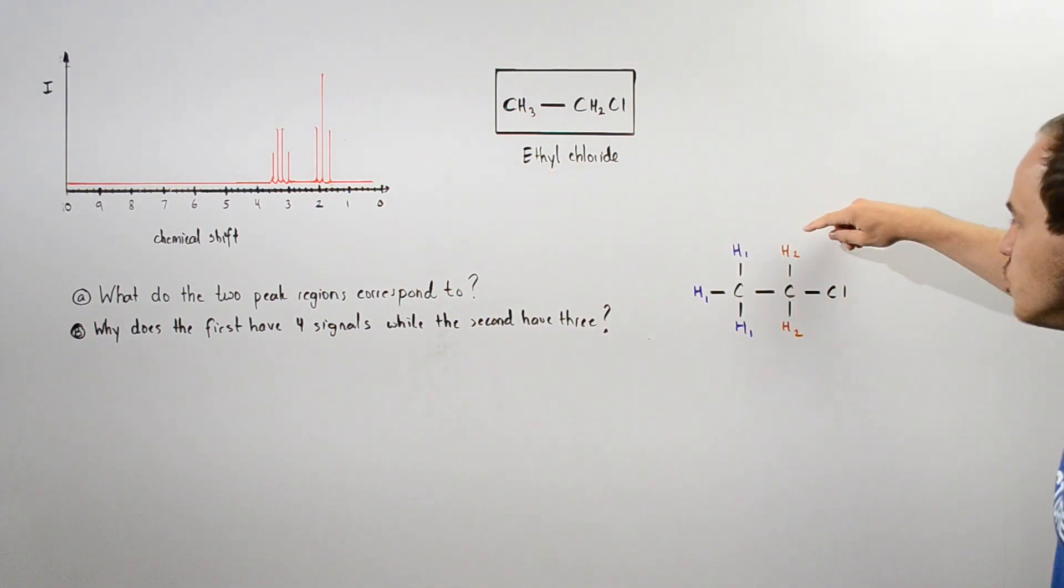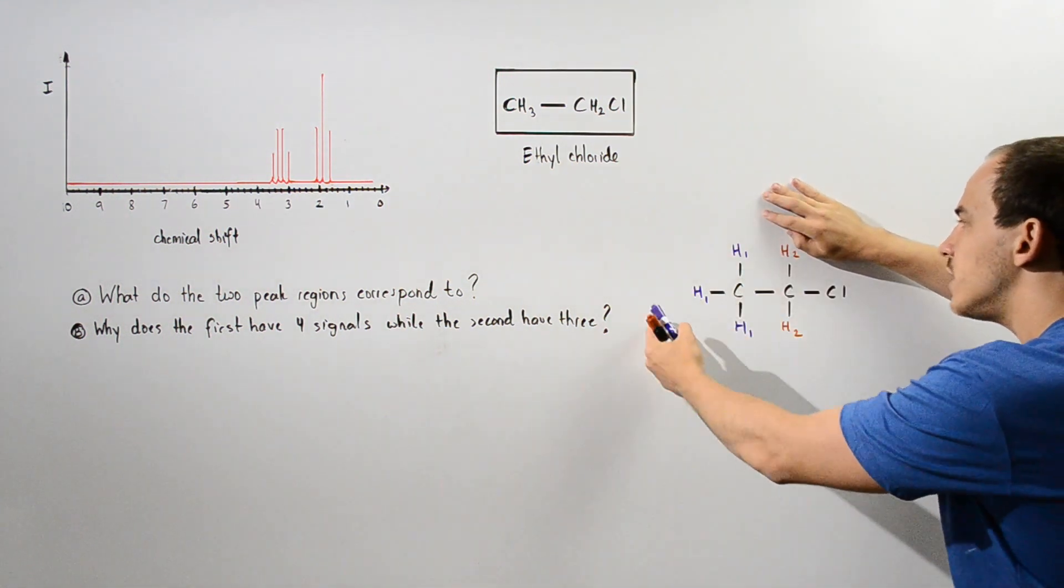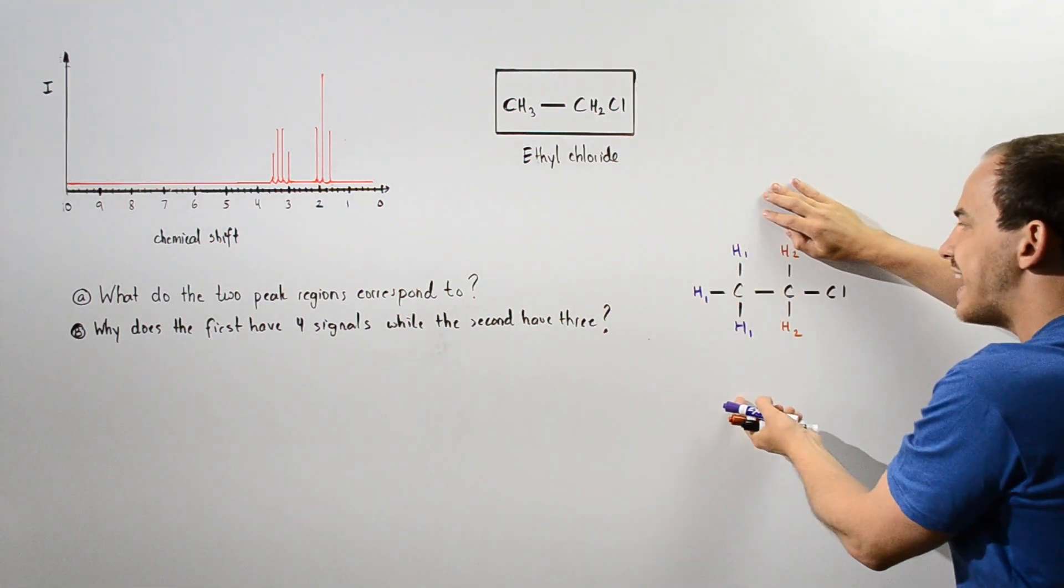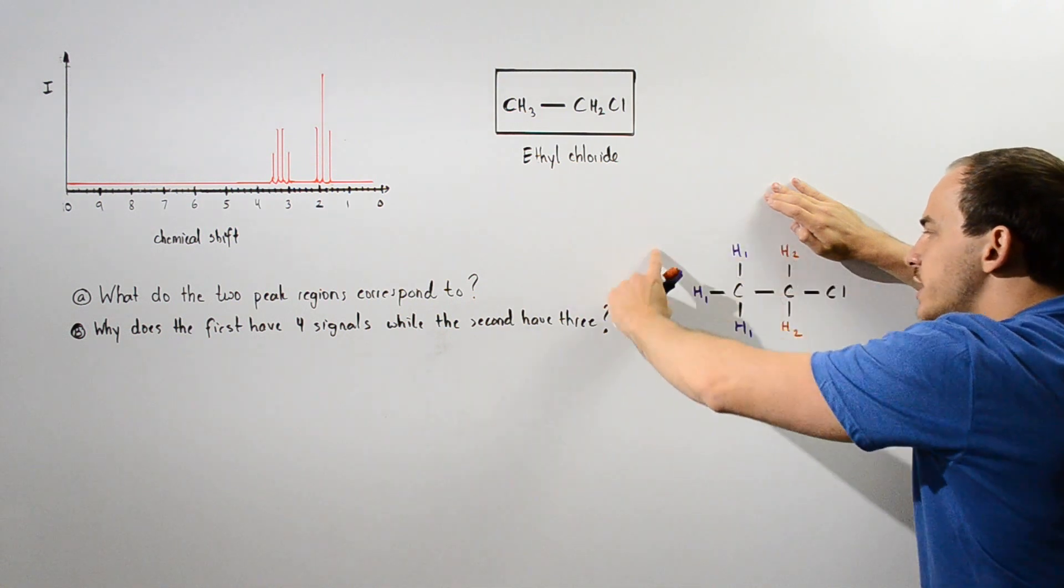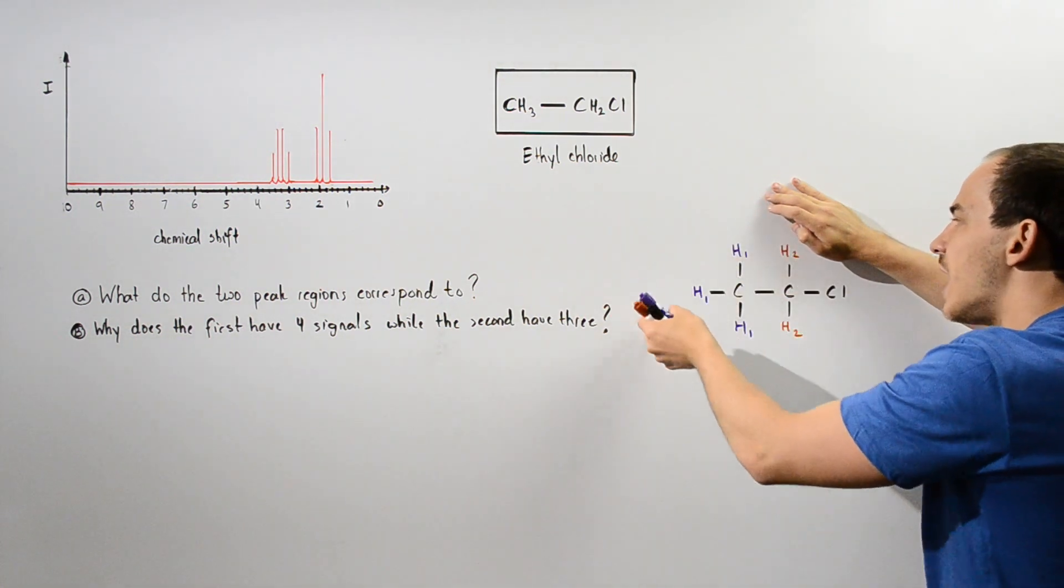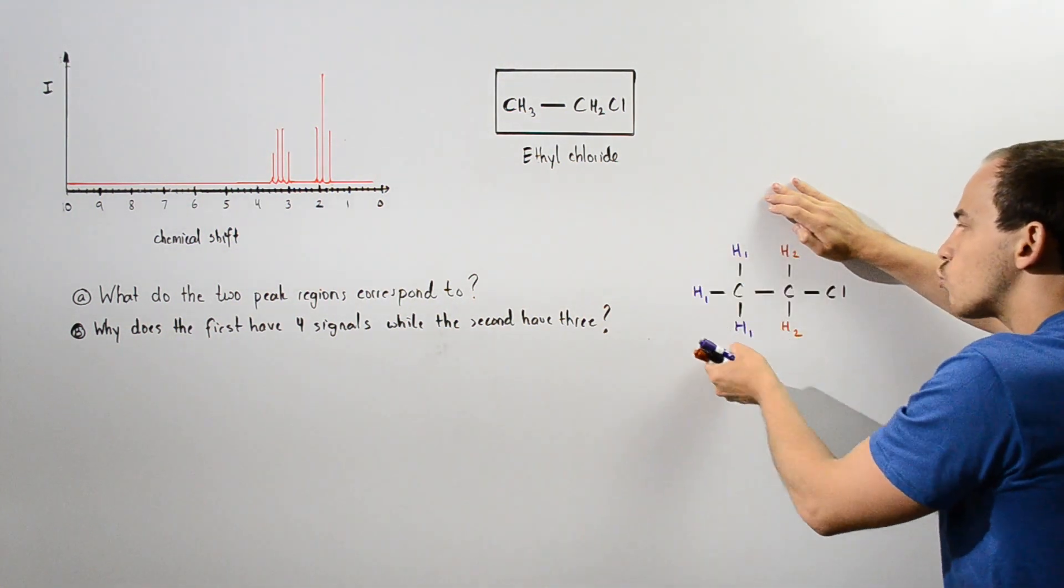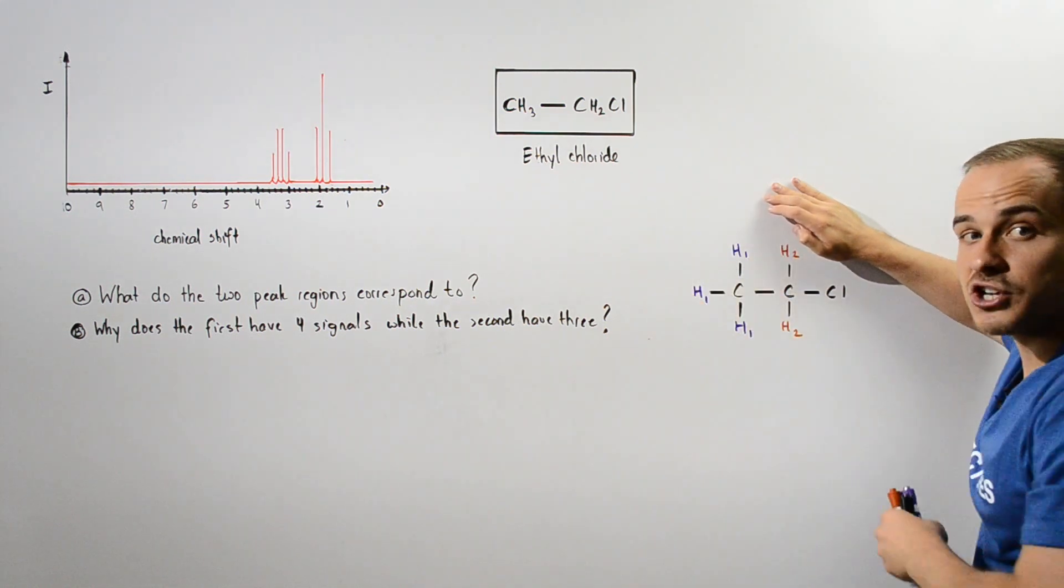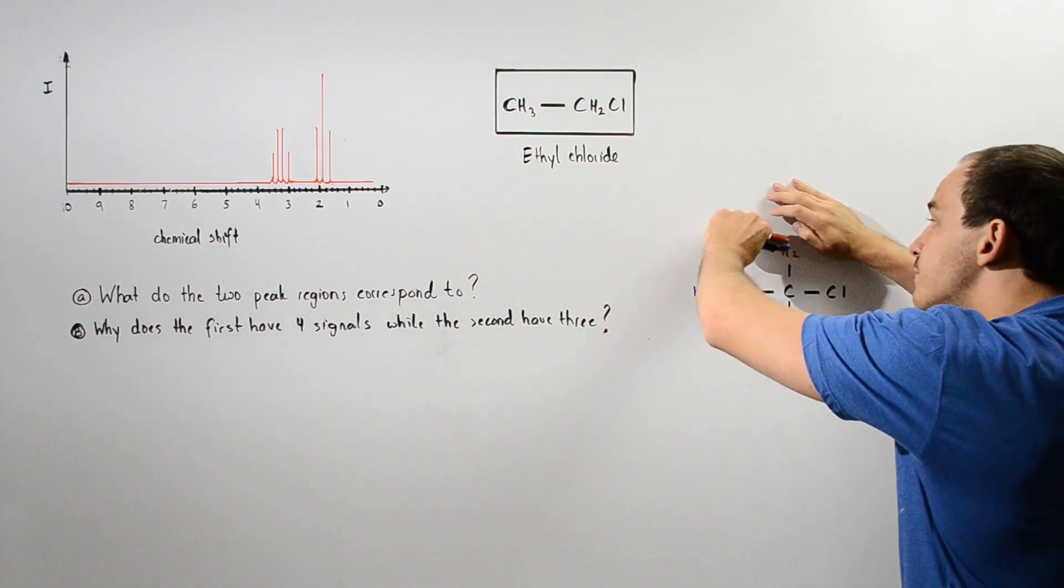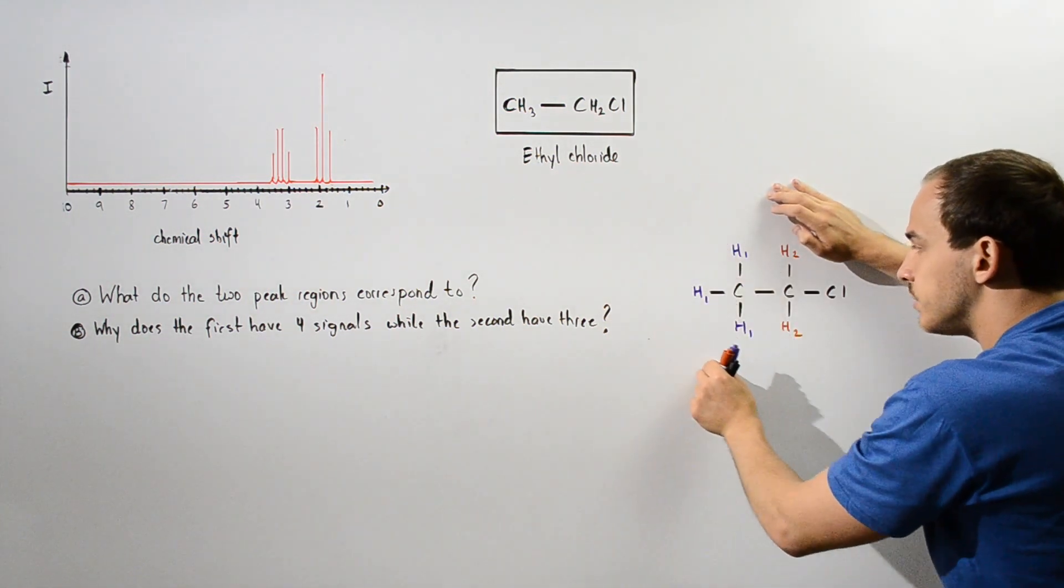So notice that this contains a relatively large electron density because we have three H atoms. So we have a lot of electron density around these three H atoms, and that means we have more shielding taking place.